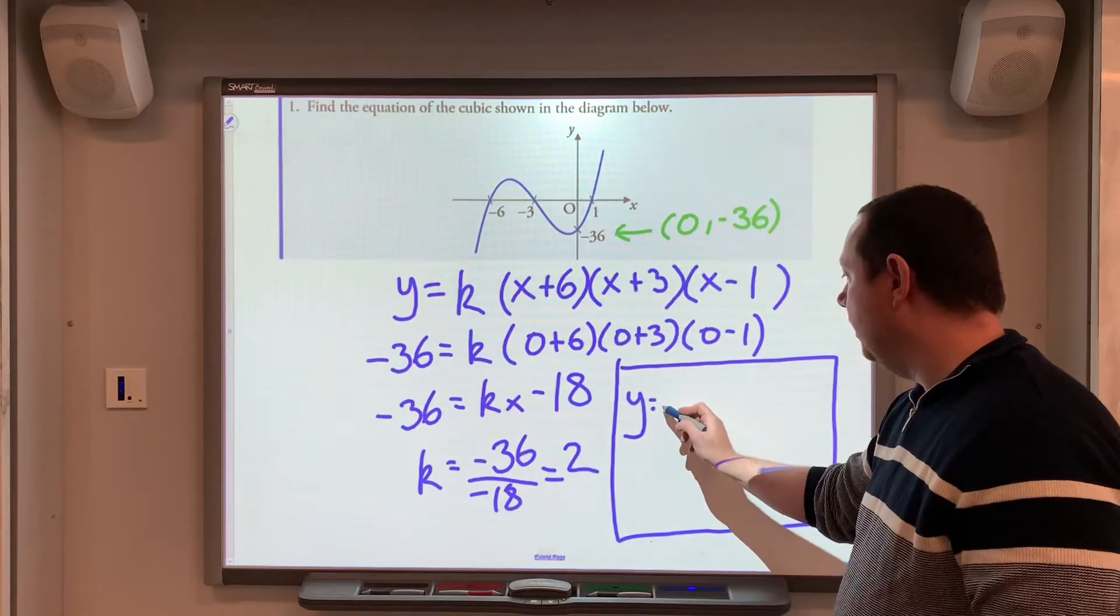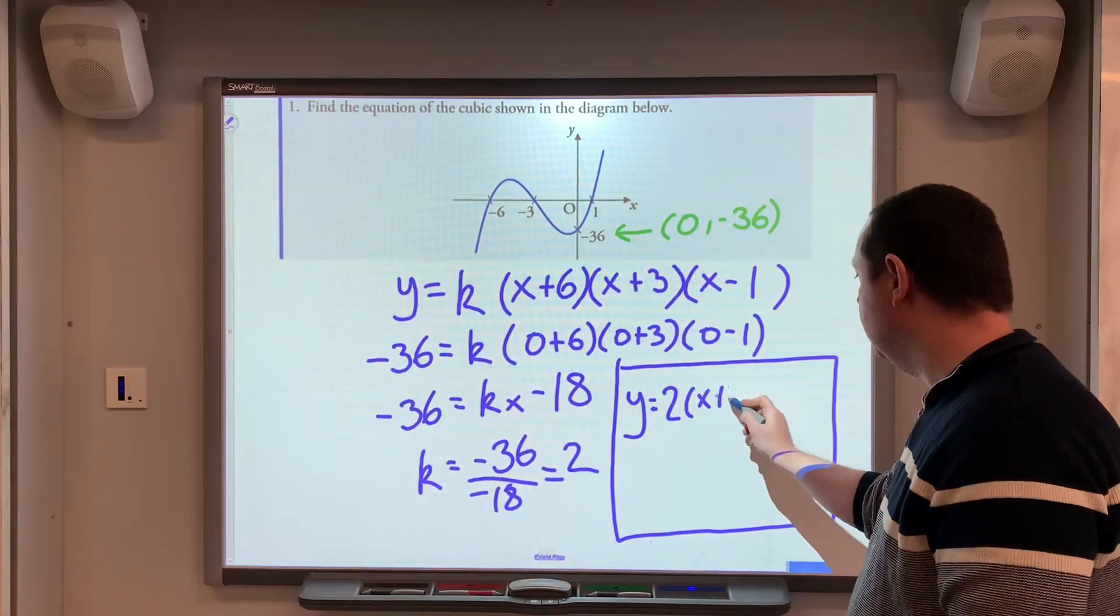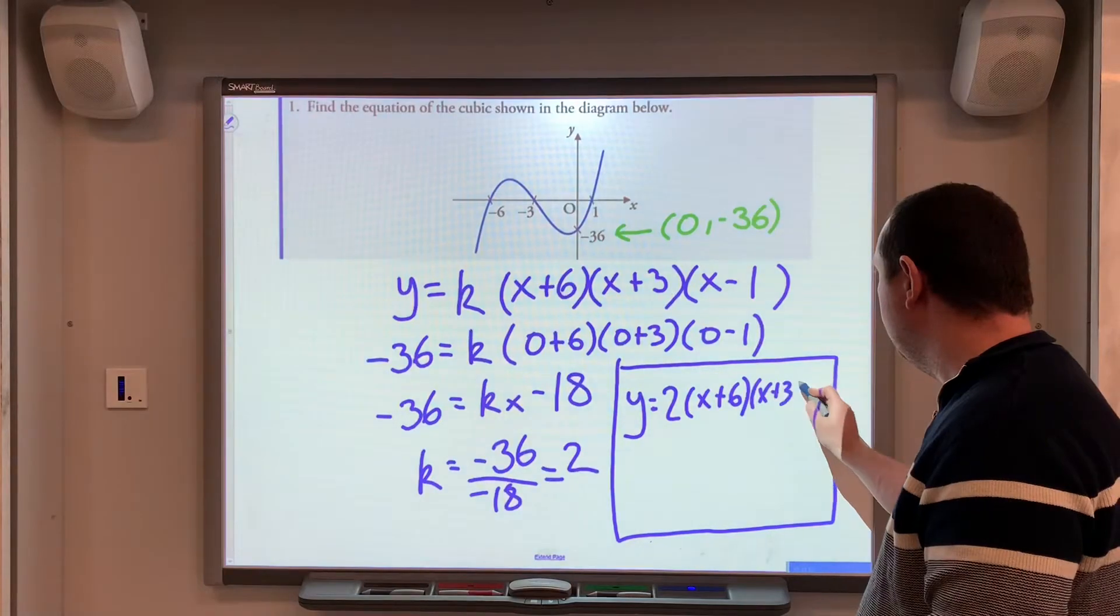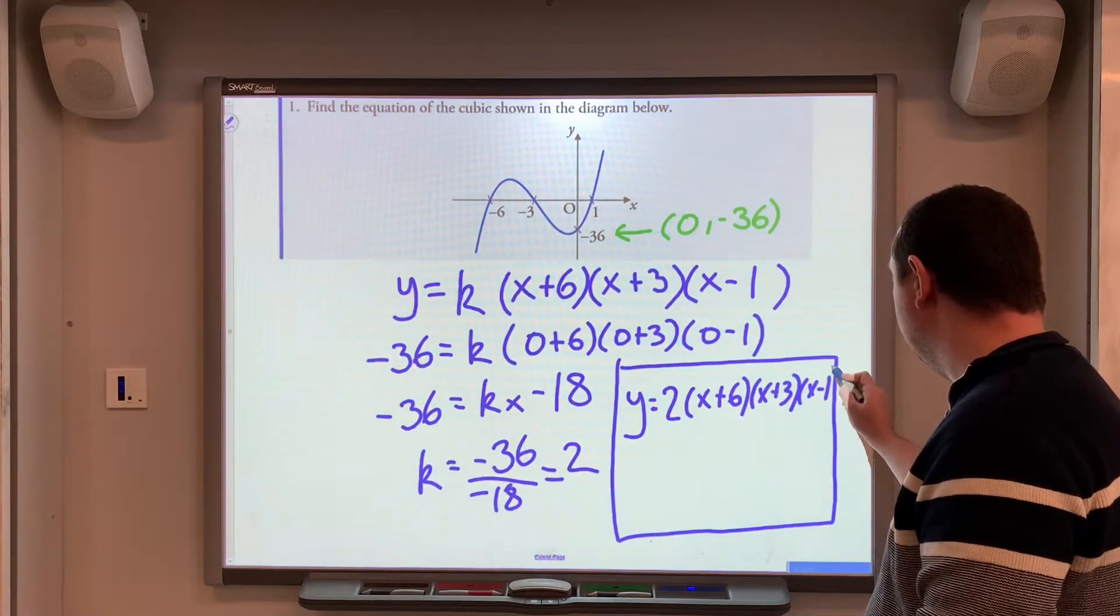So, our final answer is y equals 2, x add 6, x add 3, x minus 1, and we're done.